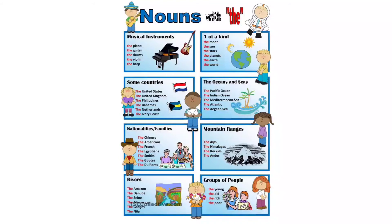We use 'the' before the names of certain countries, such as the United States, the UK. We also use 'the' before the names of oceans and seas, such as the Pacific Ocean, the Indian Ocean, the Mediterranean Sea.